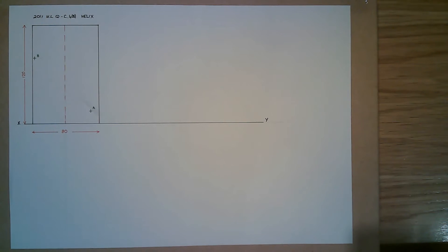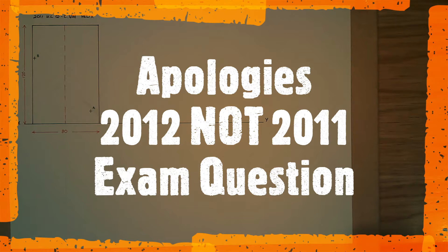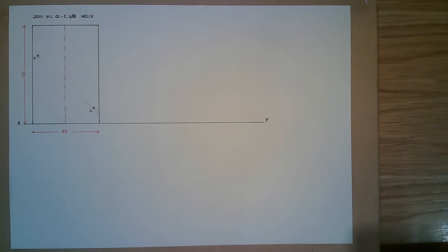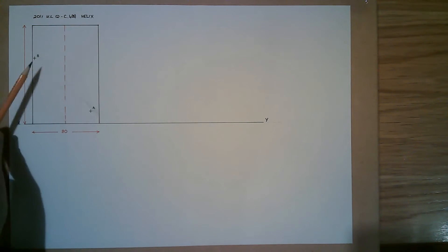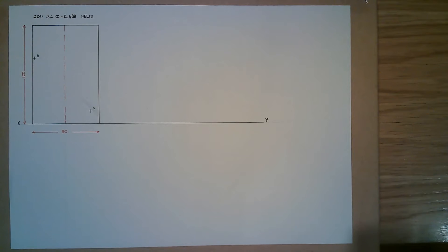Hi folks, hope you're all well. Just going to do a tutorial here today on the 2011 higher level question C4, and this is part B of the question which contains a helix. You can see on screen the actual elevation of the cylinder given in the question, with the diameter, height, and positions of point A and B. Part B of that question comes in four parts itself.